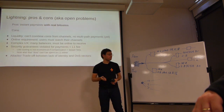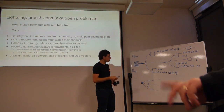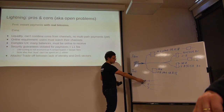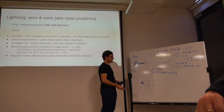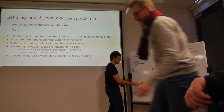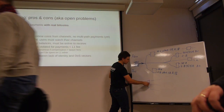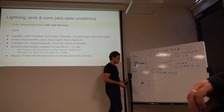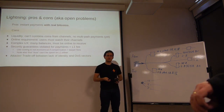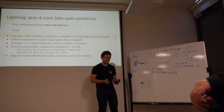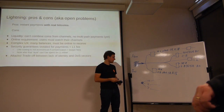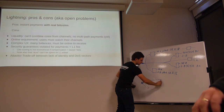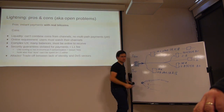Multi-part payments mean that if I have coins spread across channels, I can send 12 coins by using 10 coins from one channel and 2 from another, combining them into a single payment. This is similar to how IP packets find their way through different routes on the internet. Currently we must choose only one path to the destination and use it exclusively.